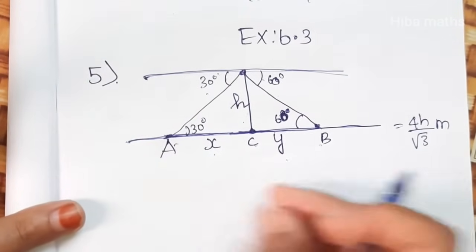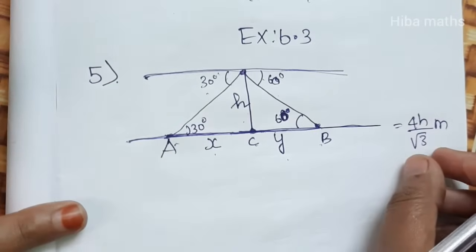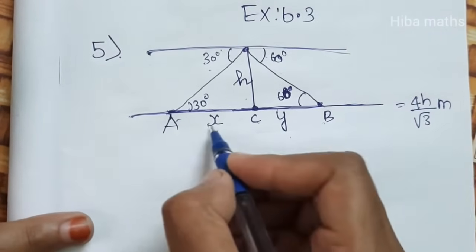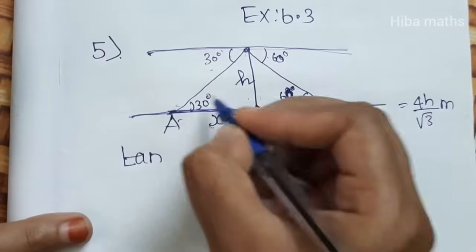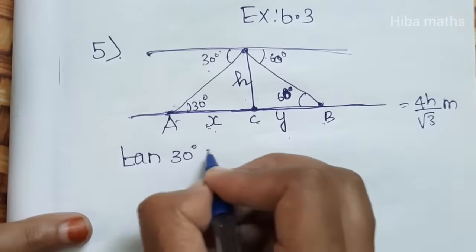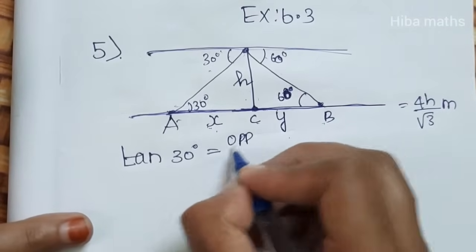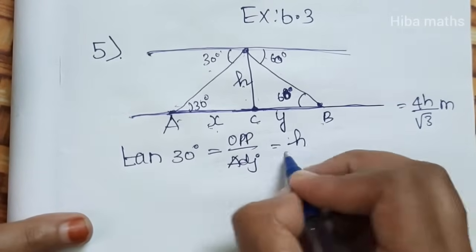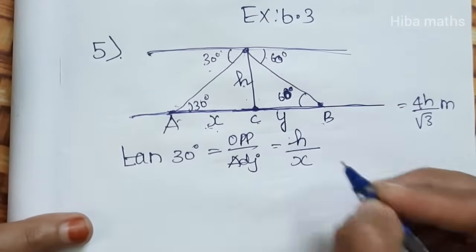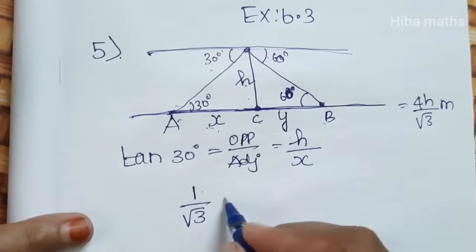First, let's find x using the triangle. Tan 30 degrees equals opposite by adjacent. Opposite is height h, adjacent is x. Tan 30 value equals 1 by root 3, so 1 by root 3 equals h by x. Therefore x equals h root 3.